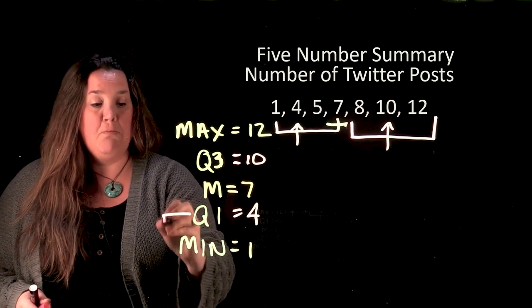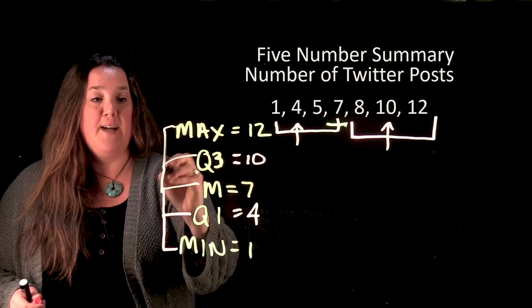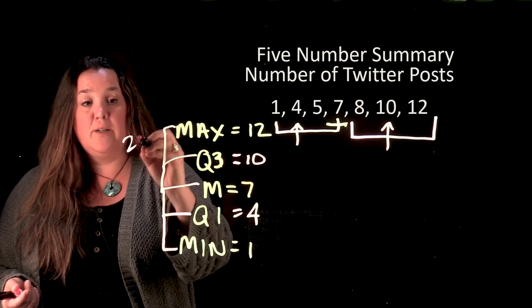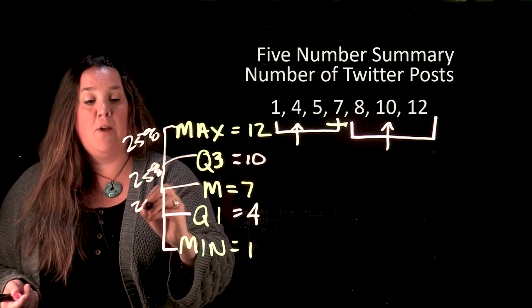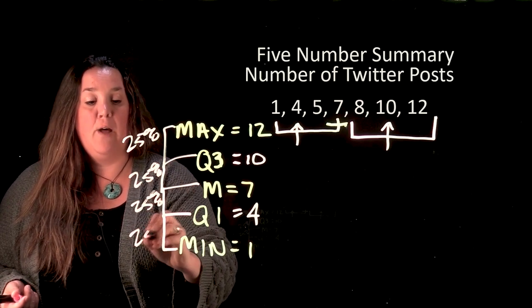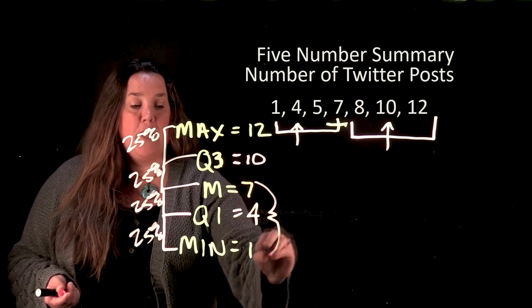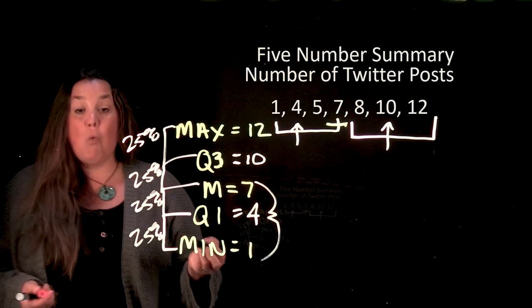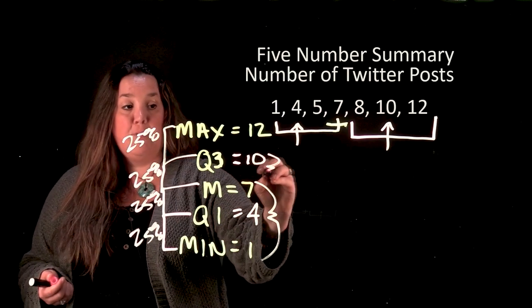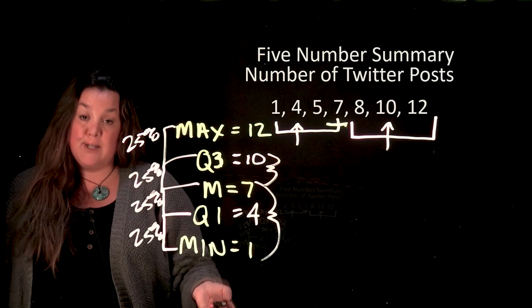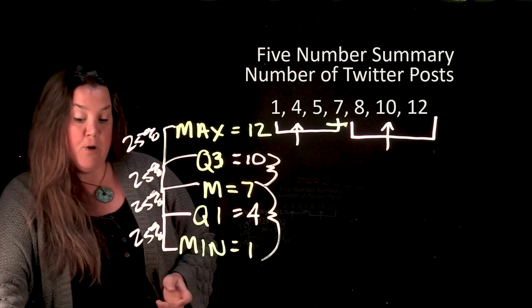I just want to emphasize one more thing before I let you go for the day. Remember that the five number summary has the goal of chunking the data into 25 percent chunks. So between each of these five numbers there's 25 percent. So for this I could say that 50 percent of people post between one and seven twitter posts per day or I could say 25 percent of people post between seven and ten and that's how you would use that five number summary. Again why it's important to have it in order.